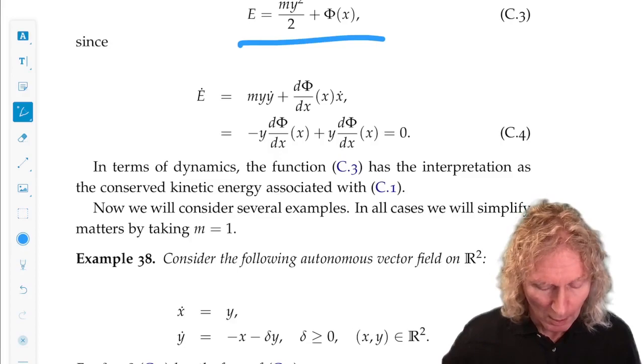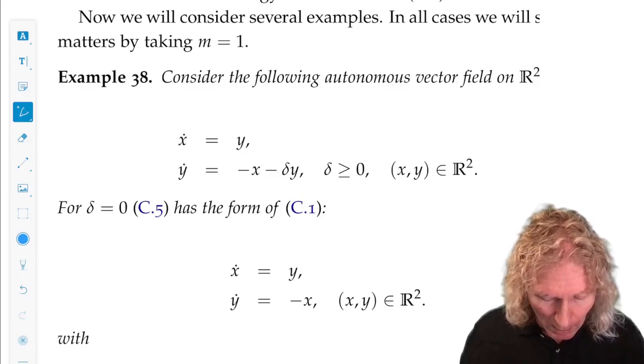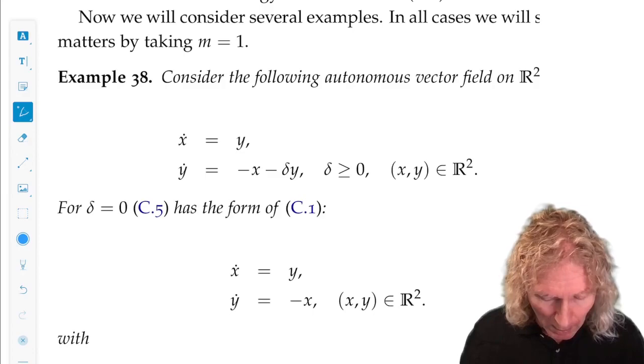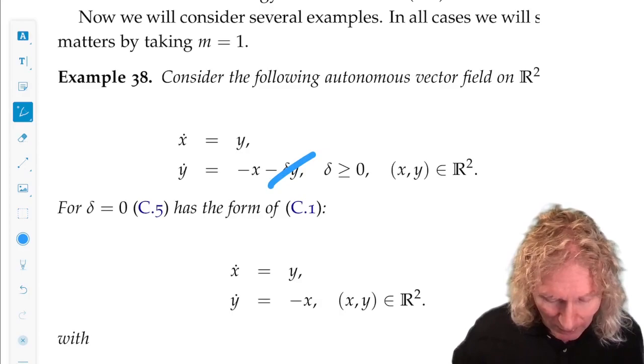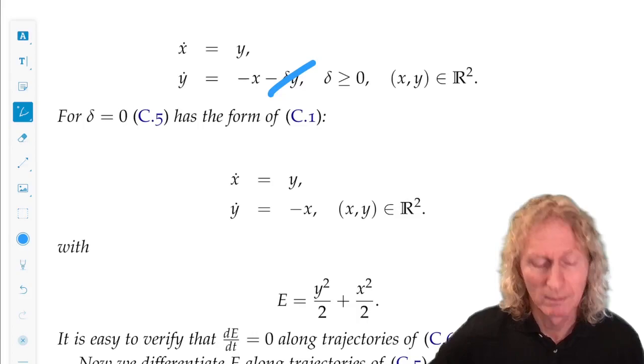All right, now I'm going to give you a couple of examples. We've seen them already, and you can see how this idea is applied. x dot equals y, y dot is minus x minus delta y, delta is greater than or equal to zero. All right, so if delta is zero, then we see there is an energy function, y squared over 2 plus x squared over 2. It's easy to verify that dE dt is zero.